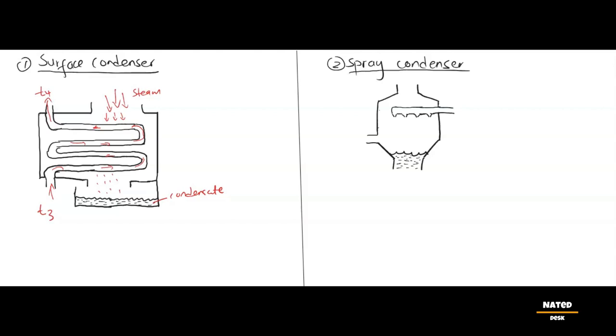4. Condensate collection. Now the water, known as condensate, drips down from the tubes and gets collected in a pan or a hot well at the bottom of the condenser.